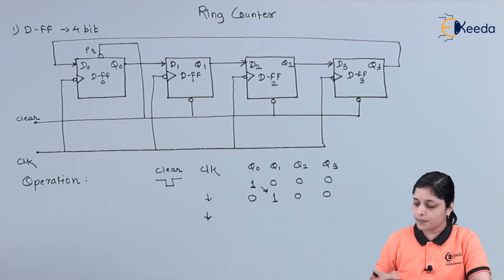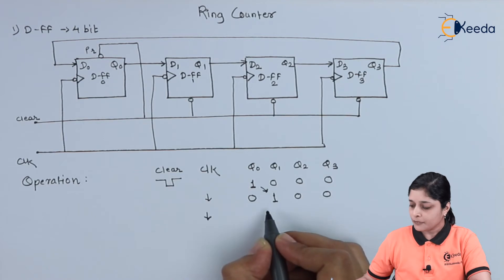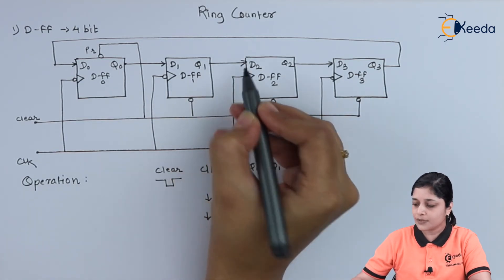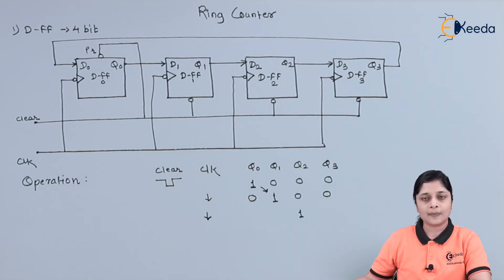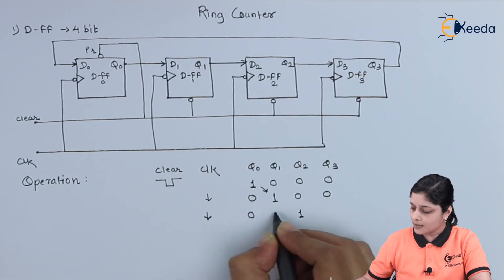Again, for next application of a clock pulse, specifically a negative edge-triggered clock, we have Q1 given to the D2. So Q2 is 1 now and remaining are 0.